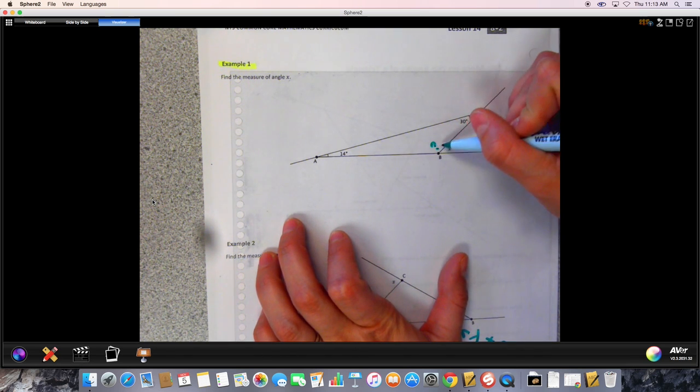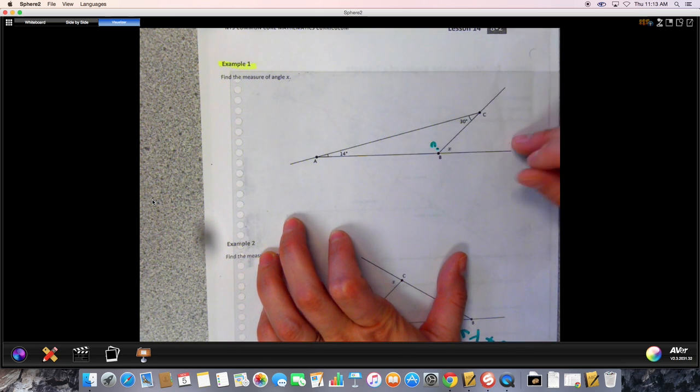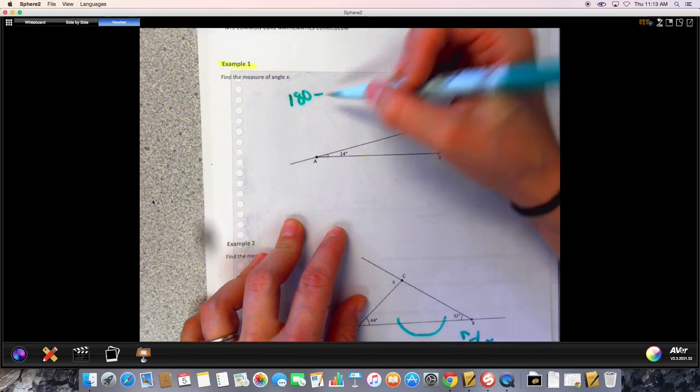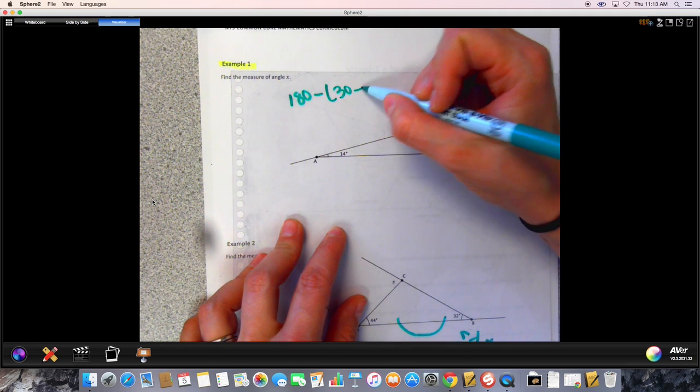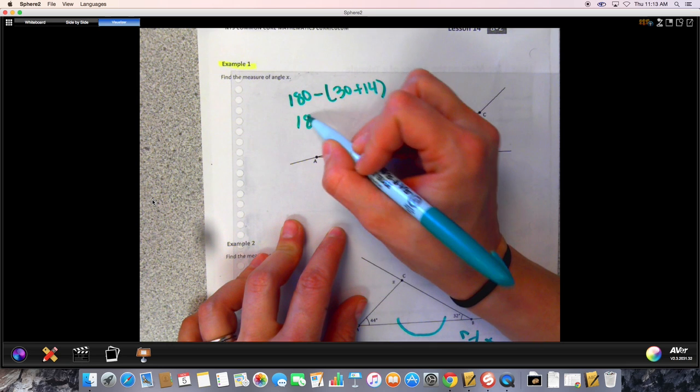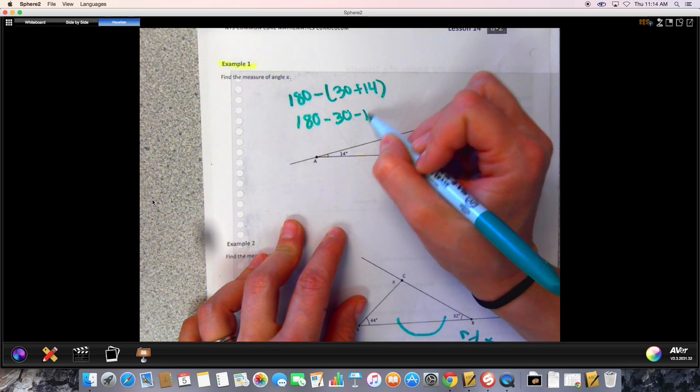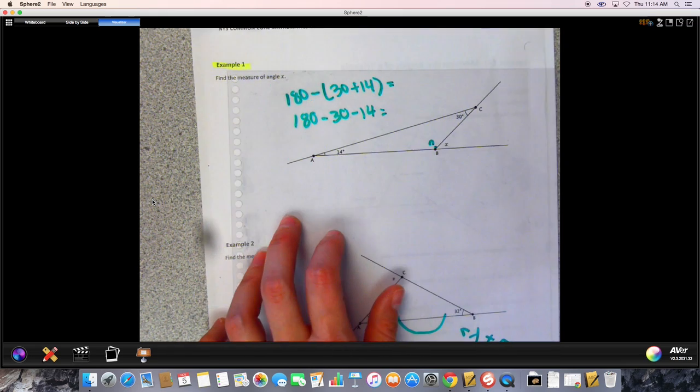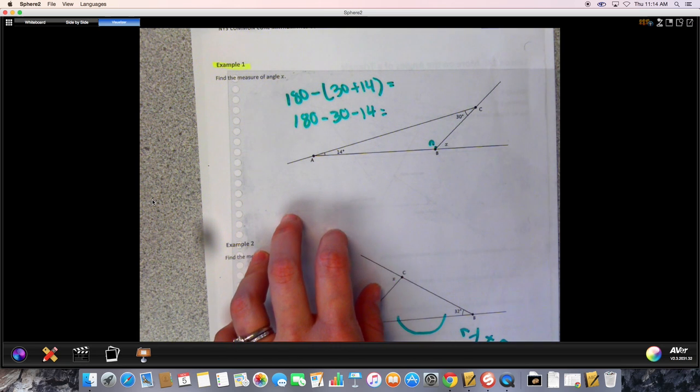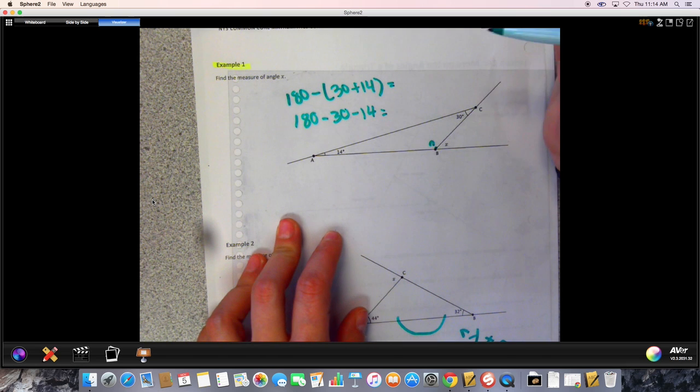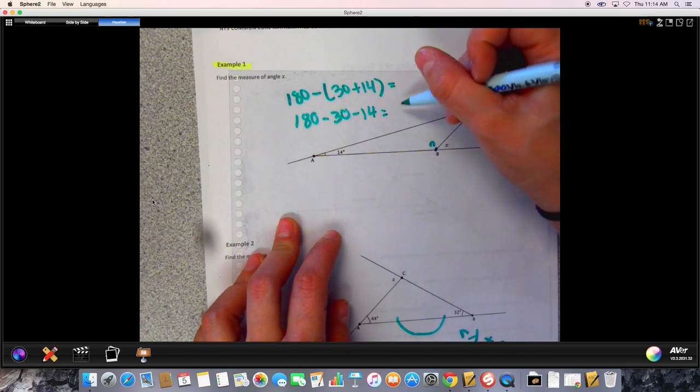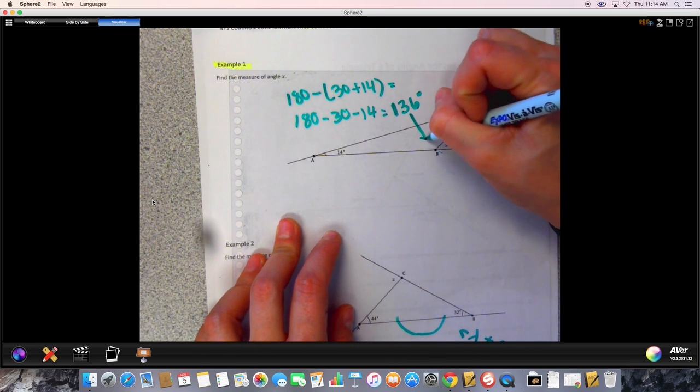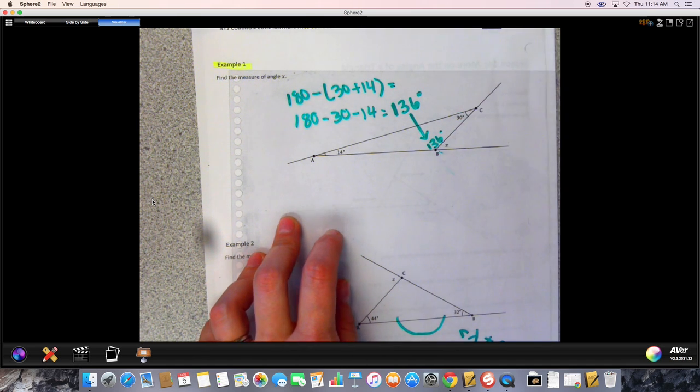Okay, so in order to figure out this angle, you actually need to figure out this angle first. And you can do this angle because you know that there are 180 degrees total in every triangle. So you can do 180 minus 30 plus 14, or you could do 180 minus 30 minus 14. It will give you the same answer. Or you could do 30 plus 14 and then subtract it from 180. However you want to roll with that. So it ends up being 180 minus 44, and that ends up giving you 136 degrees.